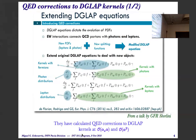Let me motivate a bit why we care about QED corrections. In the one-dimensional world, recently Germán, Germán, and Daniel calculated the QED corrections to DGLAP kernels up to order alpha-S times alpha — the mixed ones — and alpha-S squared. They calculated the corrections to the quark and gluon kernels, and also included the photon kernels and the lepton kernels as well. So all these ingredients are known at a very high level.